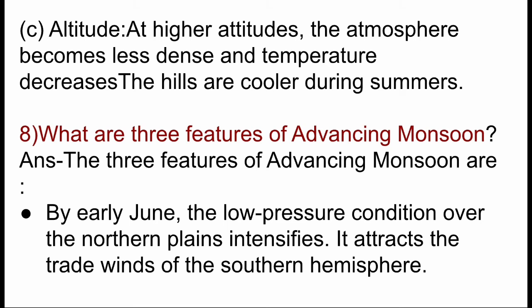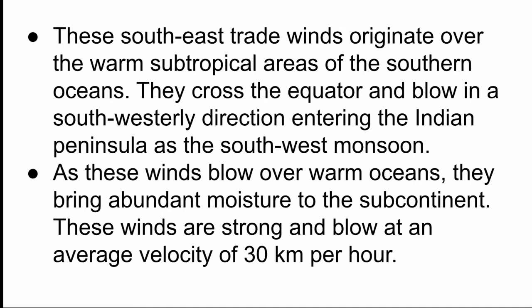What are the three features of advancing monsoon? By early June, the low-pressure condition over the northern plains intensifies. It attracts the trade winds of the southern hemisphere. These southeast trade winds originate over the warm subtropical areas of the southern oceans. They cross the equator and blow in a south-westerly direction, entering the Indian peninsula as the southwest monsoon. As these winds blow over warm oceans, they bring abundant moisture to the subcontinent. These winds are strong and blow at an average velocity of 30 km per hour.